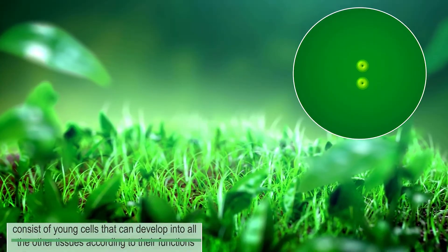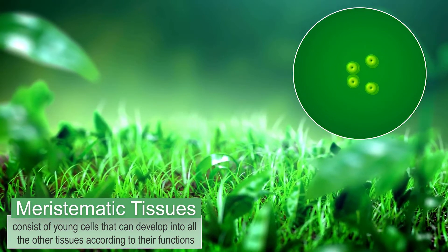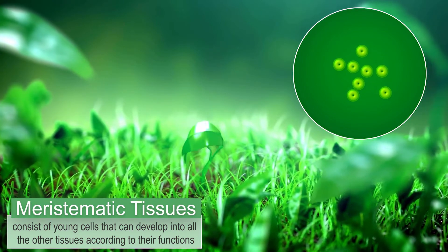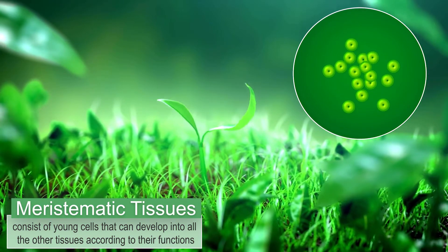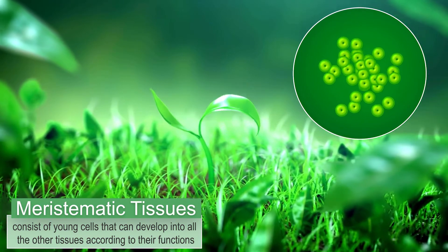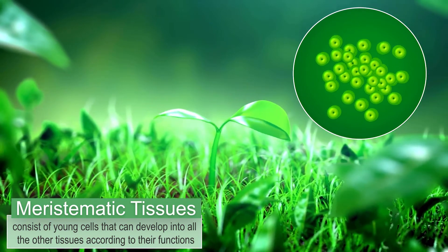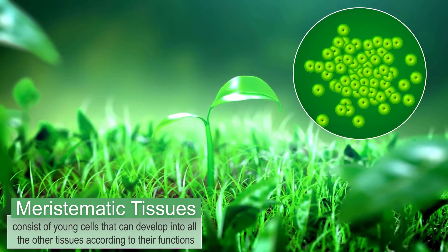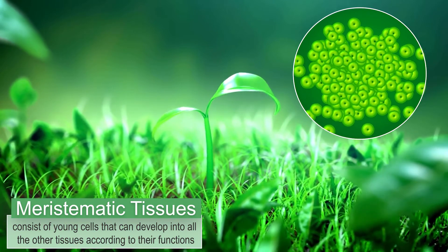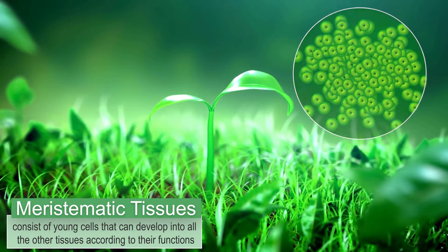Meristematic tissues consist of young, actively dividing cells. These tissues can develop into the other tissues according to their functions.